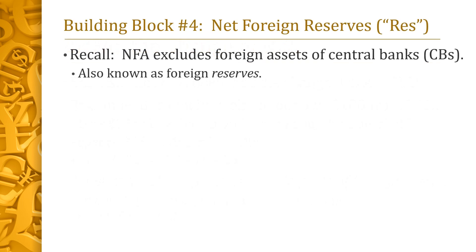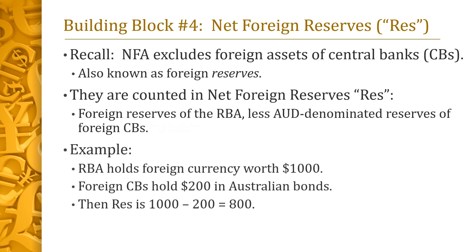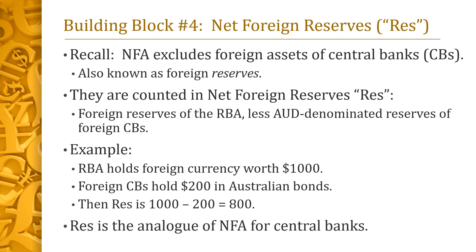We now turn to the fourth building block of the balance of payments. Recall that NFA excludes the foreign assets of central banks. These are called the central banks' foreign reserves, and are counted in net foreign reserves, abbreviated RES. It is defined as the RBA's foreign reserves minus the Australian-denominated foreign reserves of foreign central banks. For example, suppose the RBA holds foreign currency worth $1,000 Australian dollars, and foreign central banks hold Australian government bonds worth $200 Australian dollars. Then RES is $1,000 minus $200, which is $800. In this sense, RES is analogous to NFA — it is simply the net foreign assets of the RBA vis-à-vis foreign central banks.